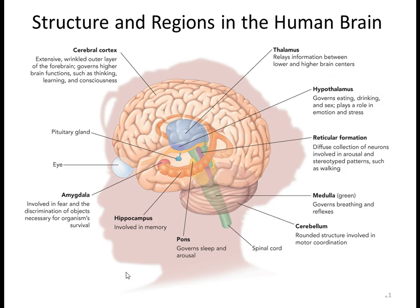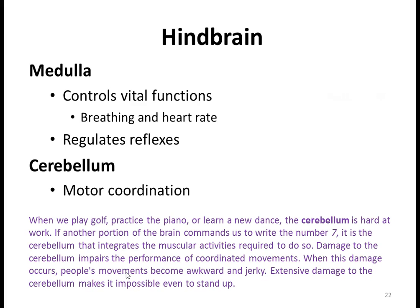The hippocampus is involved in memory — we'll discuss it a lot in chapter six. The amygdala is the emotional center of the brain, involved in fear and discrimination of objects necessary for survival. The pituitary gland manages hormonal functioning. The cerebellum is hard at work when playing golf, practicing piano, or learning a new dance; it integrates the muscular activities required for coordinated movement. Damage to the cerebellum causes awkward, jerky movements, and extensive damage can make it impossible to even stand.